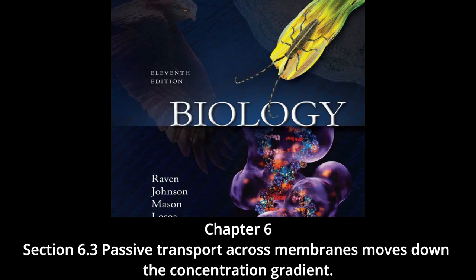The concentration of all solutes determines a solution's osmotic concentration. A solution with higher concentration is hyperosmotic; one with lower concentration is hypoosmotic; equal concentrations are isosmotic. In cells, the plasma membrane separates cytoplasm from extracellular fluid. If the cytoplasm were hypoosmotic to the extracellular fluid, water would diffuse out of the cell toward the higher solute concentration, causing the cell to shrink until osmotic concentrations equalize.